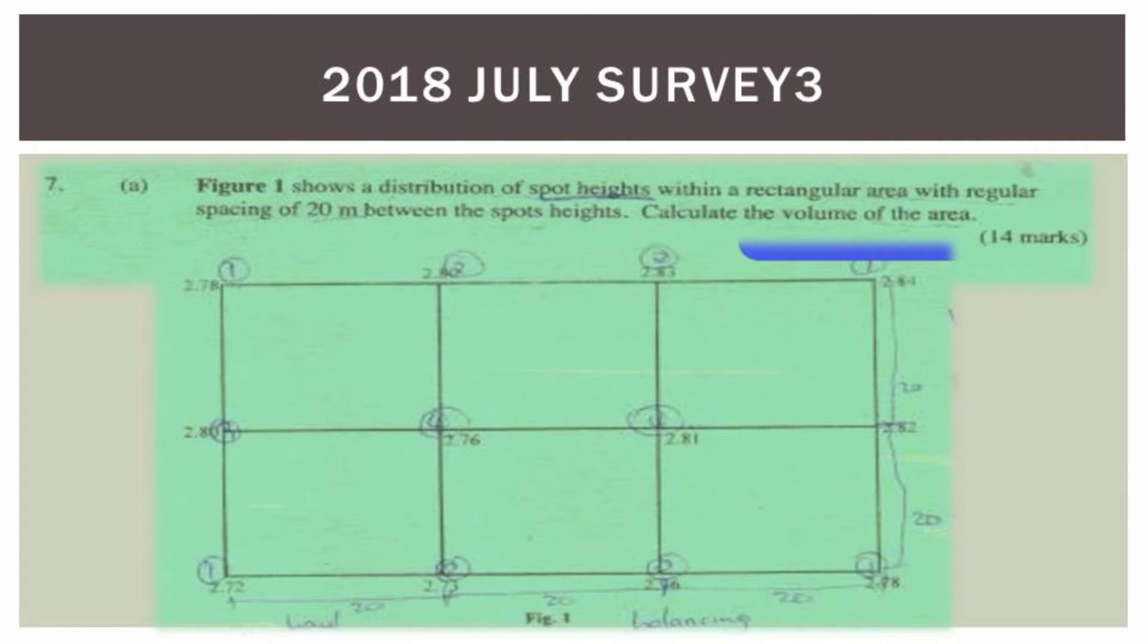Let's go to the question. Question number seven: Figure 1 shows a distribution of spot heights within a rectangular area with regular spacings of 20 meters between the spot heights.